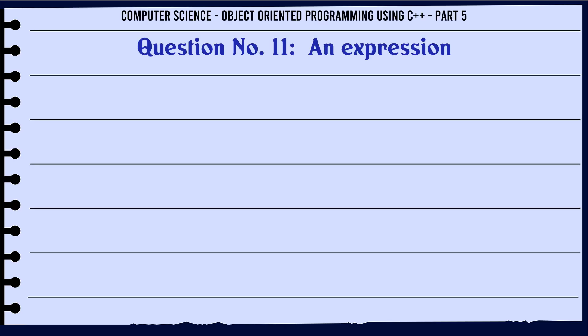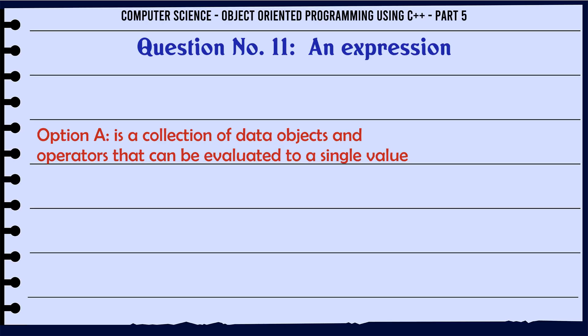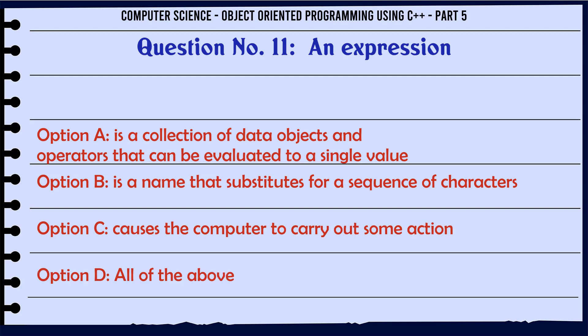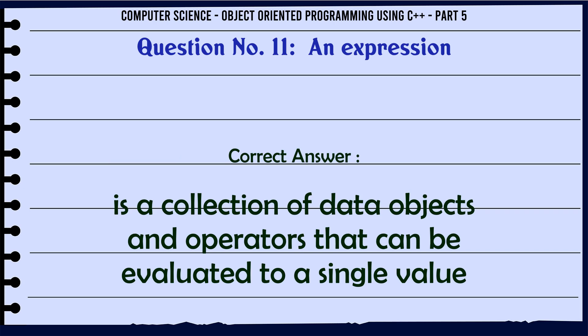An expression. A. Is a collection of data objects and operators that can be evaluated to a single value. B. Is a name that substitutes for a sequence of characters. C. Causes the computer to carry out some action. D. All of the above. The correct answer is: A — is a collection of data objects and operators that can be evaluated to a single value.